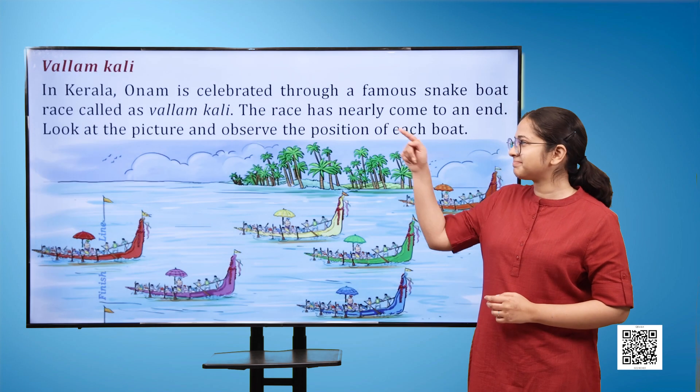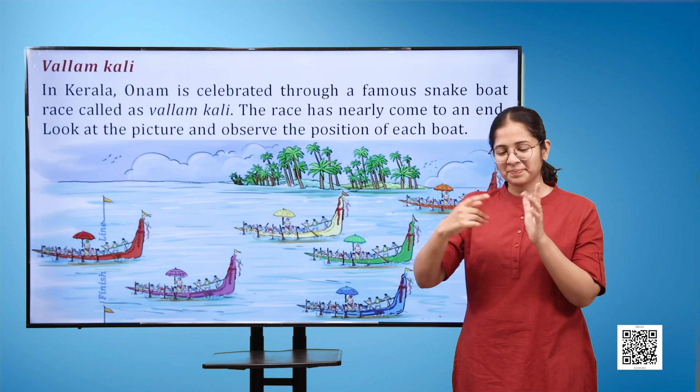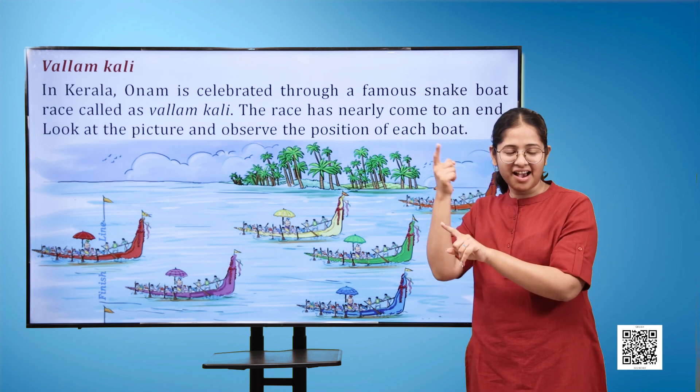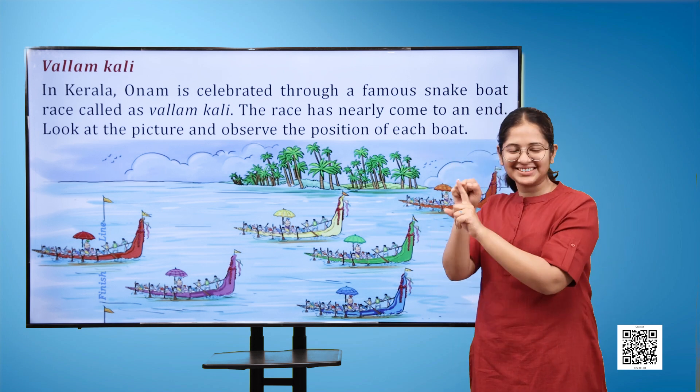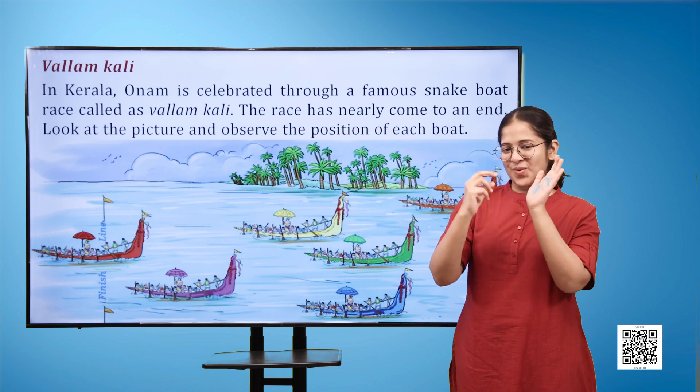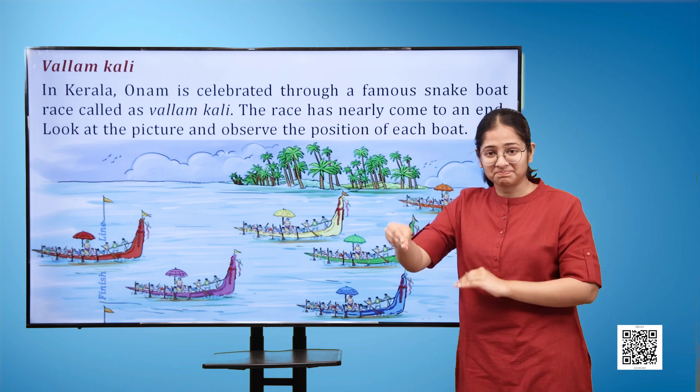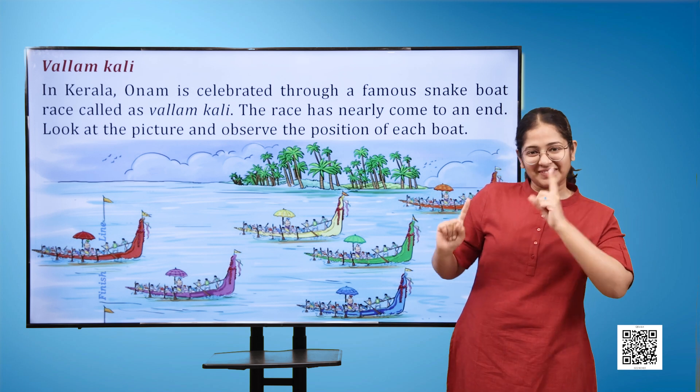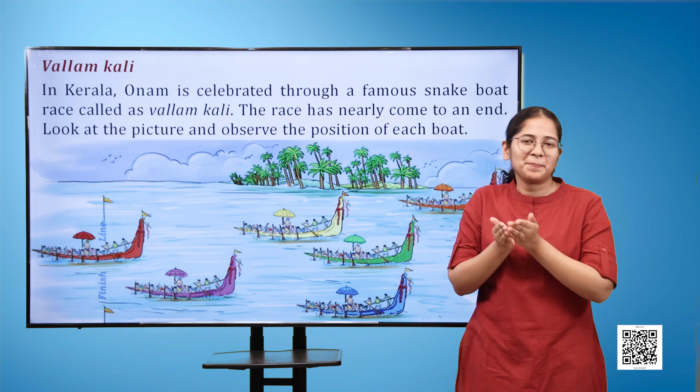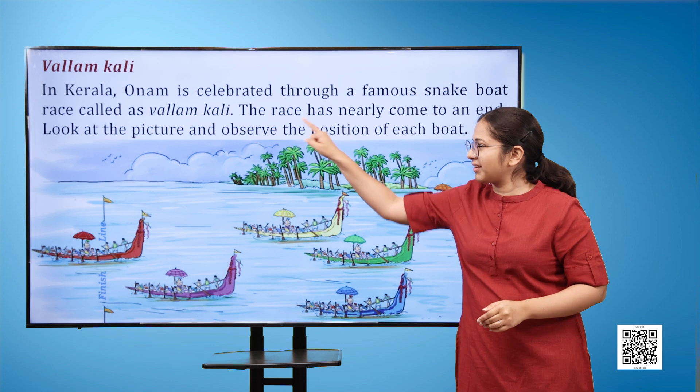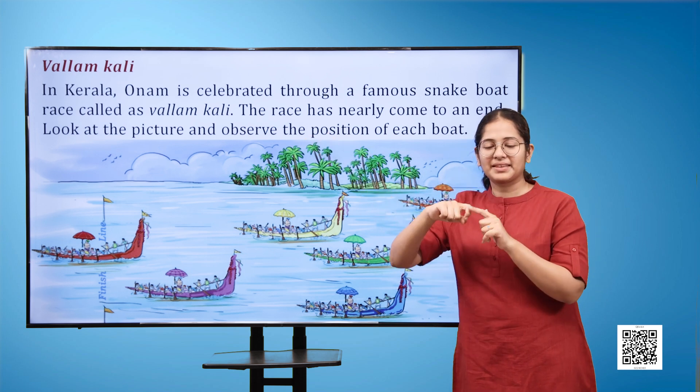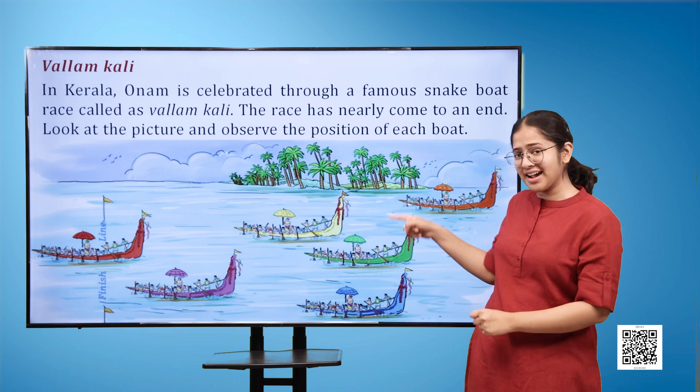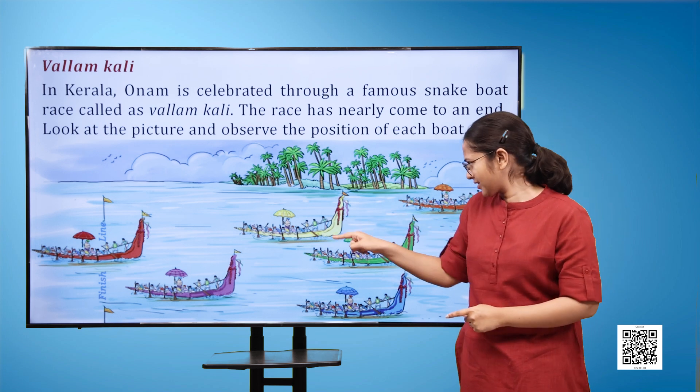Varlam Kali. In Kerala, Onam is celebrated through a famous snake boat race called Varlam Kali. The race has nearly come to an end. Look at the picture and observe the position of each boat. Here is an image where we see six colorful boats in the river racing against each other. There is a blue color boat, a green color boat, a yellow color boat.